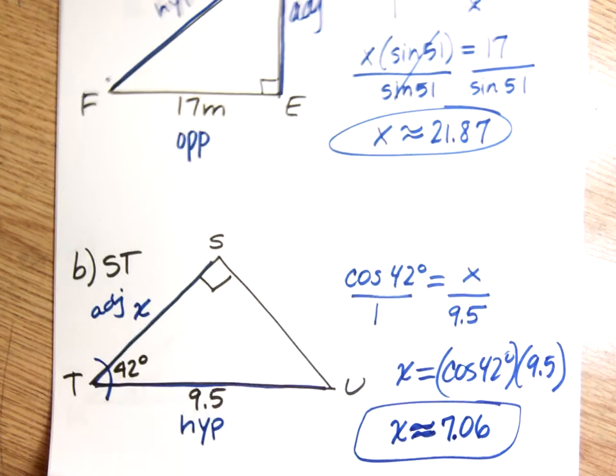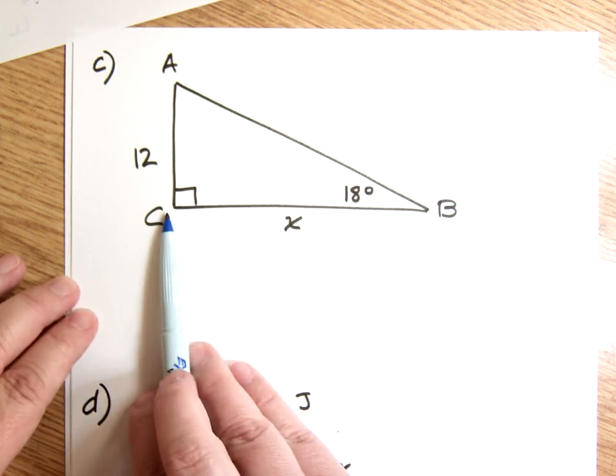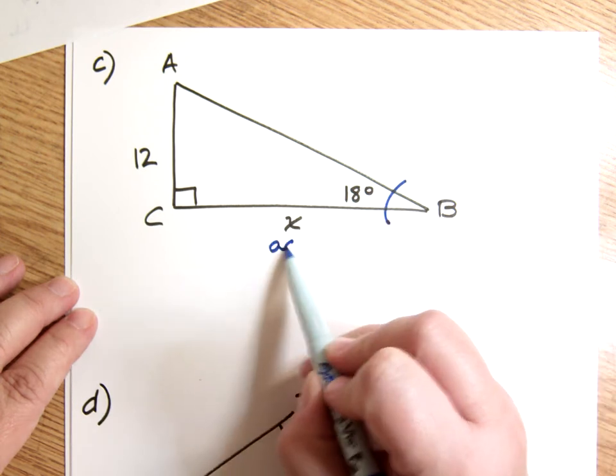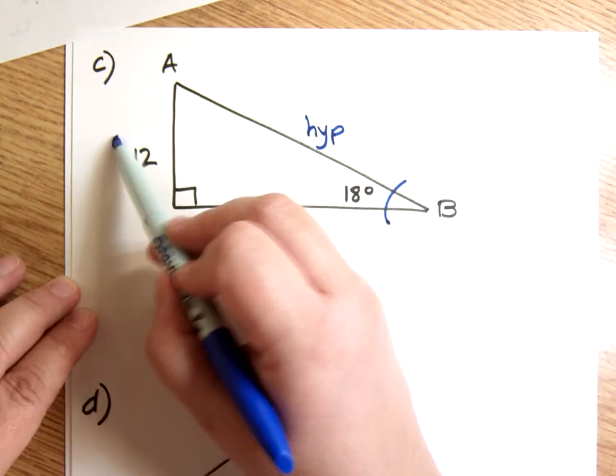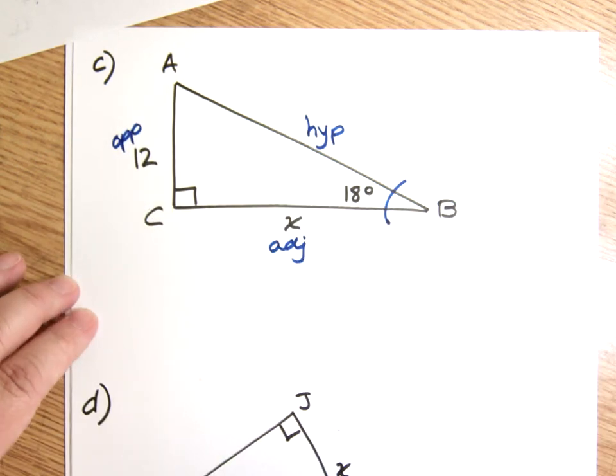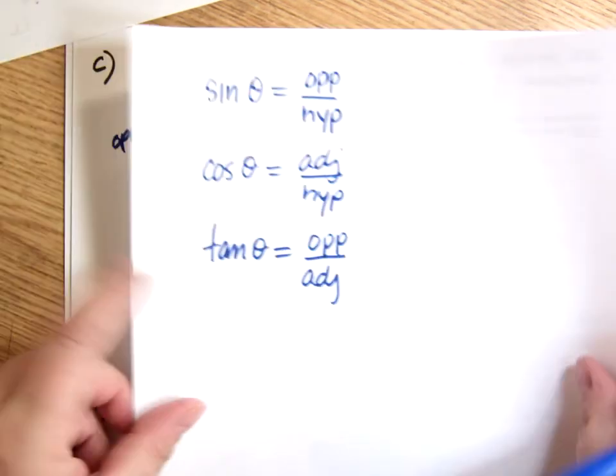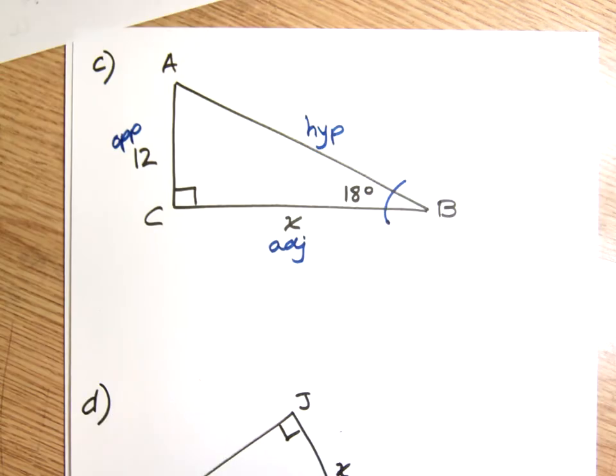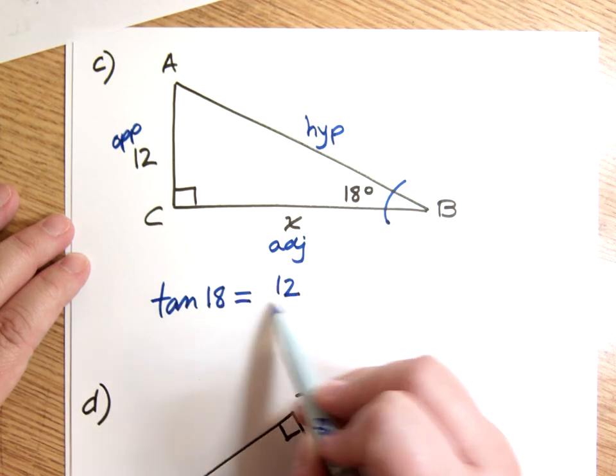All right. Example 3. Or excuse me, C. This one asks me for BC in triangle ABC. It gave me angle 18 degrees. This side is adjacent to the 18 degree angle. And this side is hypotenuse. Which means the 12 must be opposite. So the two sides I'm working with in this one are the opposite and the adjacent. Which means I will use the tangent. Because it's the only one that works with opposite and adjacent.